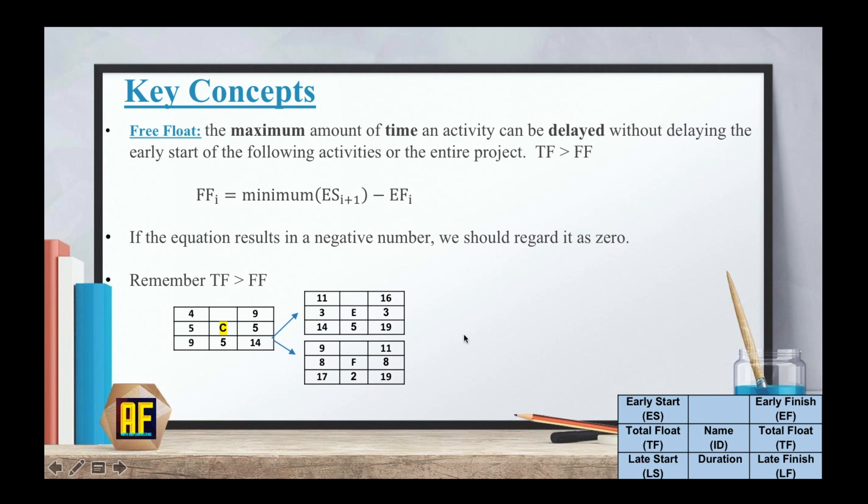So let's take another example. Here we have activity C going to E and F. So FF of C equals the minimum ES of C plus 1. But is C plus 1 E or F? And this is where the minimum comes into place. The minimum means the smaller of the two is going to be the number that we are going to pick. So obviously it's going to be 9. So my FF of C equals the minimum of ES_F minus the EF of C. Translating that into numbers, 9 minus 9 again equals 0.